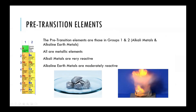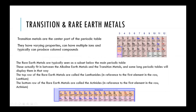In the pre-transition elements, the individual groups have specific names. The first group is the alkali metals and the second group is the alkaline earth metals. These are all metallic elements and are typically pretty reactive. The alkali metals are extremely reactive, even exploding if you drop them in water. The alkaline earth metals are more tame, but still can be moderately reactive.